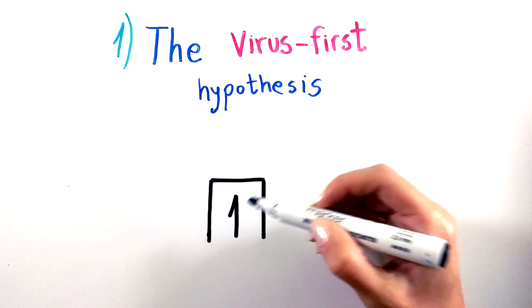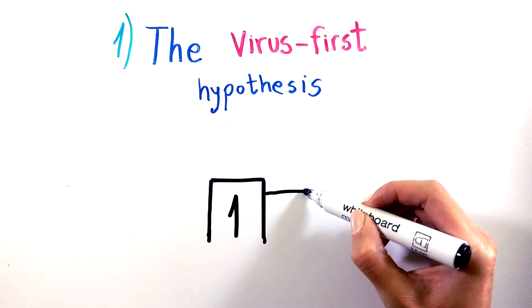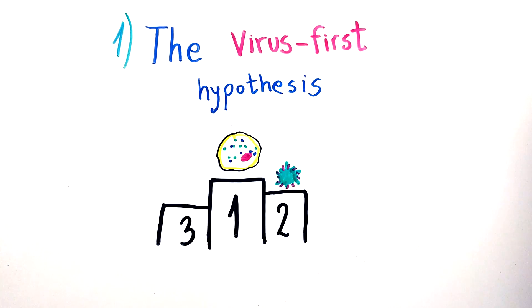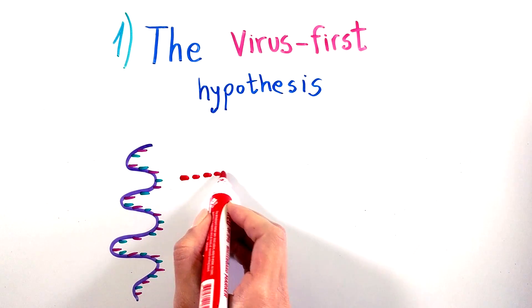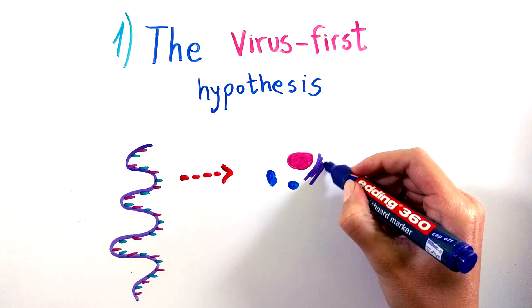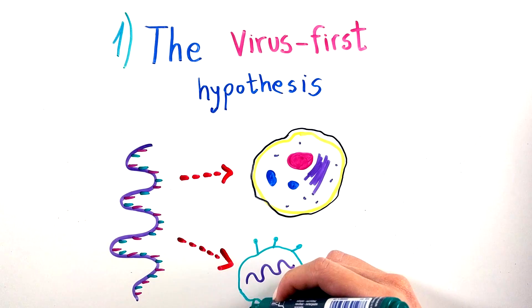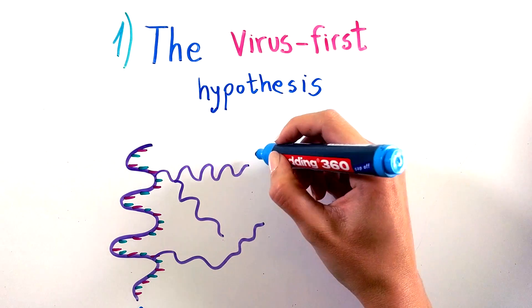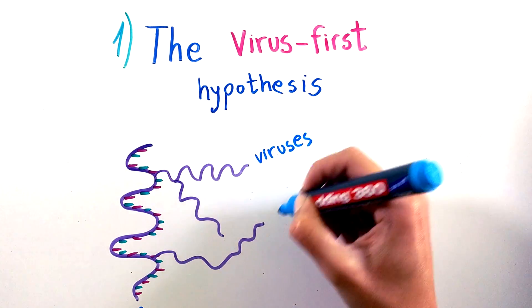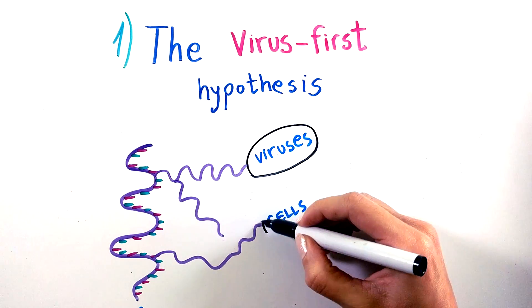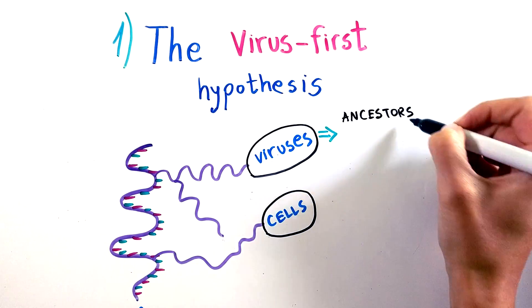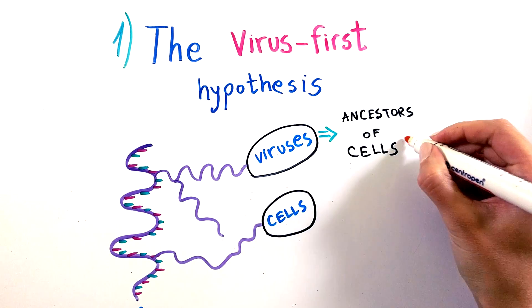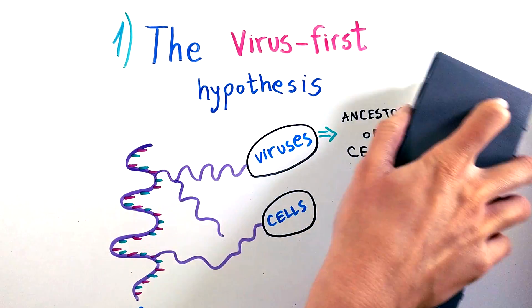And the last is the virus-first hypothesis. Previously mentioned theories assumed that cells existed before viruses, but this one proposes that viruses existed first or co-evolved with other cells. Most scientists today agree that RNA, a form of genetic material, appeared first, and then over time organized structures such as cells formed. So it is assumed that viruses may have emerged before or at the same time as the cells first appeared on Earth billions of years ago. Maybe viruses are ancestors of cellular life as we know it today.